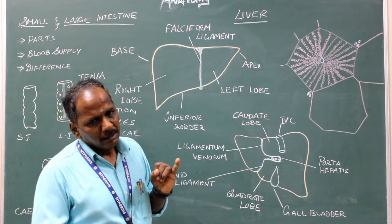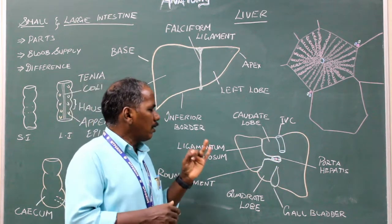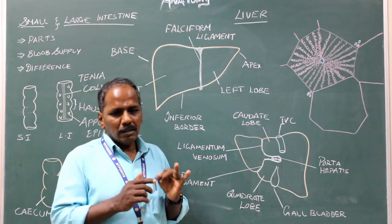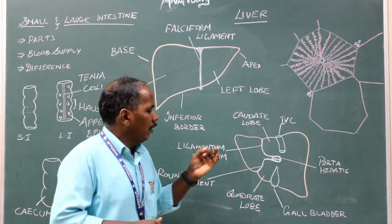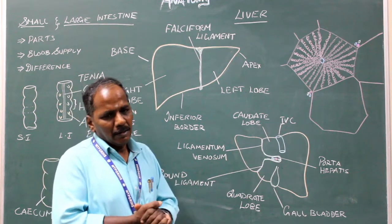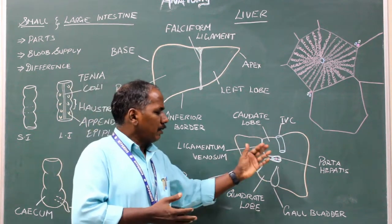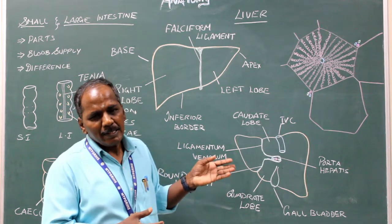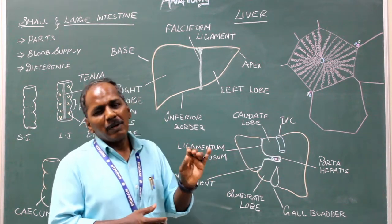Porta hepatis: number one, hepatic artery which enters; number two, portal vein that also enters into the hilum; number three, hepatic duct which emerges from the liver. These three structures together, the branches from these three structures together, form portal triangle.